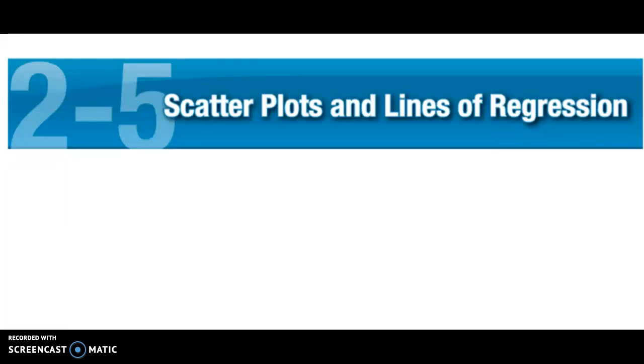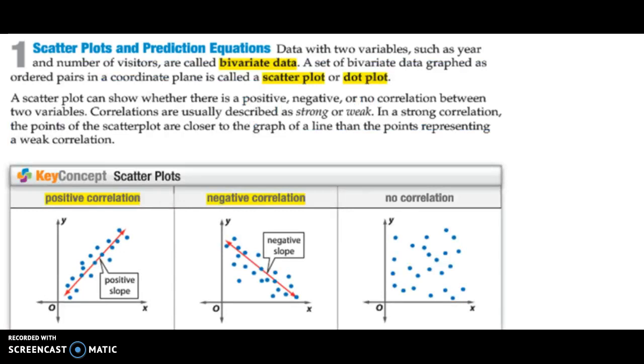Today we're going to be talking about section 2.5, which is on scatter plots and lines of regression. Anytime we have data that has two variables, it's called bivariate data. We like to graph bivariate data by using what are called scatter plots, or sometimes we call them dot plots.